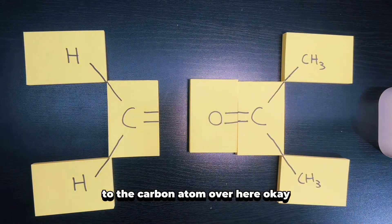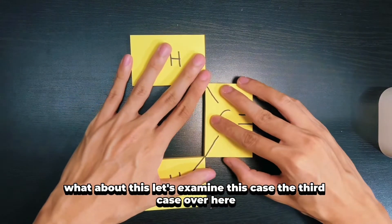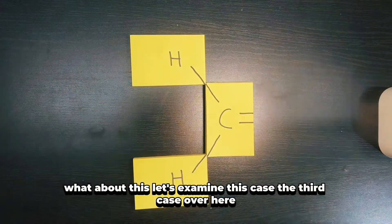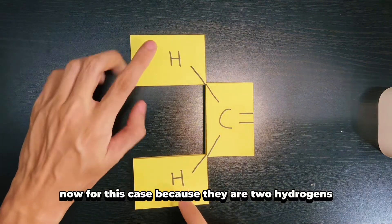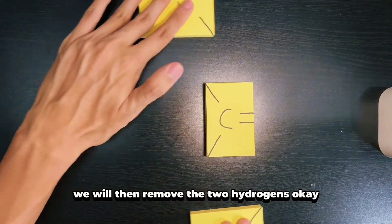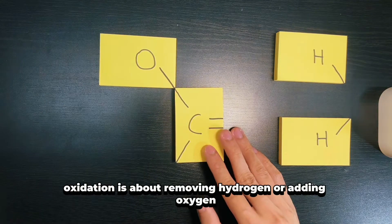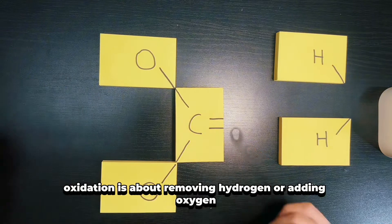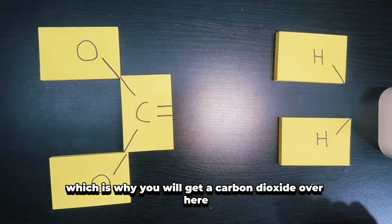For this case, because there are two hydrogens, we will then remove the two hydrogens. Oxidation is about removing hydrogen or adding oxygen, which is why you will get carbon dioxide over here. If you also add in oxygen, you will get carbon dioxide and water.